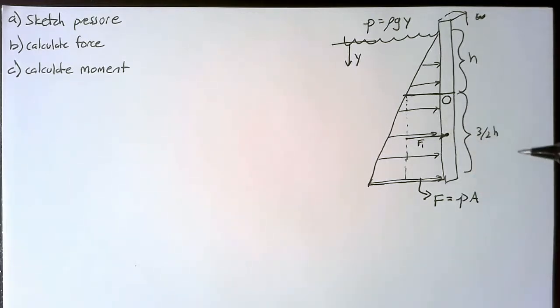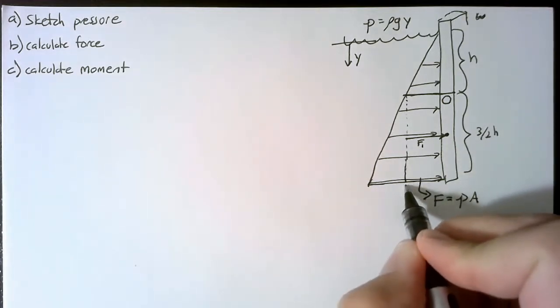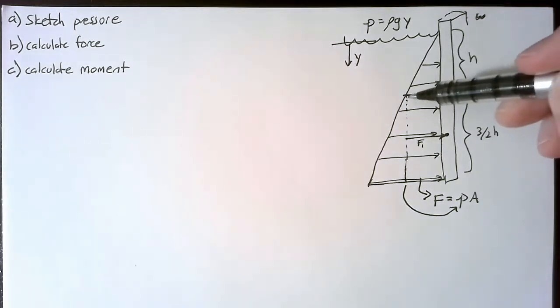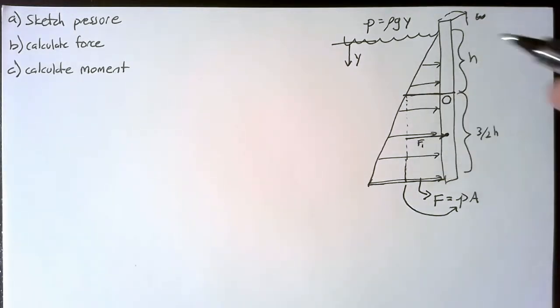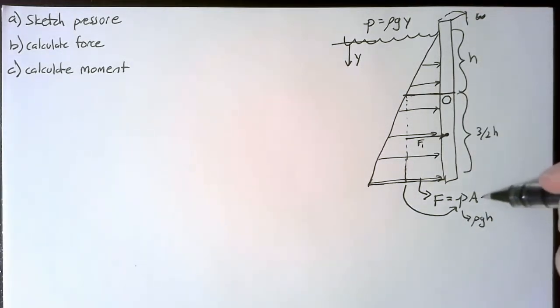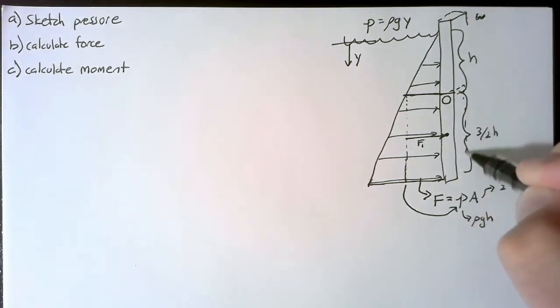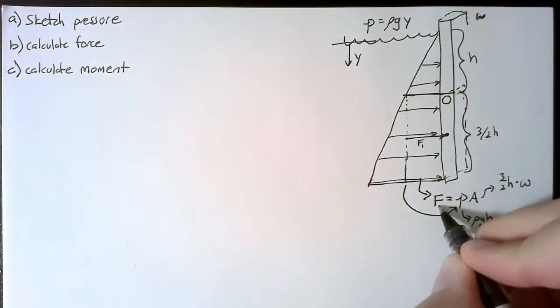But what pressure are we using? We're using this pressure right here. So this value is our pressure, and to be specific, that value is rho g h. Our area, of course, is 3 halves h multiplied by w. Just the rectangular surface that this thing is pushing against. I'm calling this F1.